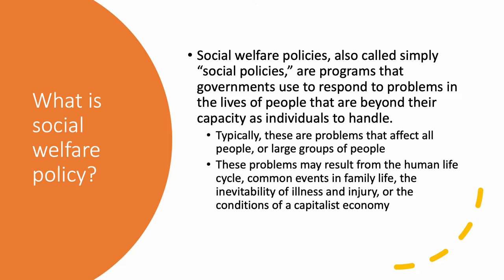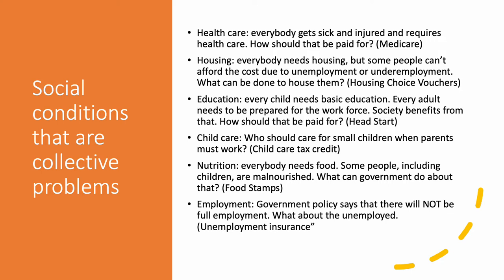Illness and injury — everybody gets sick, everybody gets injured, everyone has to pay for it. Should the government attend to those costs, subsidize them, or require that insurance companies provide health insurance in certain ways? And there's old age: in old age, people almost always eventually can't take care of themselves very well. Who's going to take care of them? Many of these social conditions are viewed as collective problems that have impacts on the larger society.